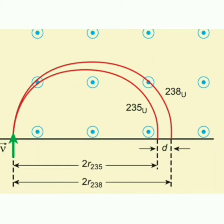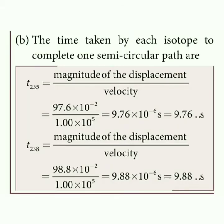Next, we calculate the time taken by each isotope to complete one semicircular path. Time equals displacement divided by velocity. For Uranium-235, the displacement is 97.6 times 10⁻² meters. Substituting and simplifying gives a time of 9.76 times 10⁻⁶ seconds, that is 9.76 microseconds for the Uranium-235 isotope.